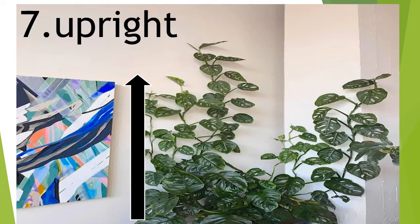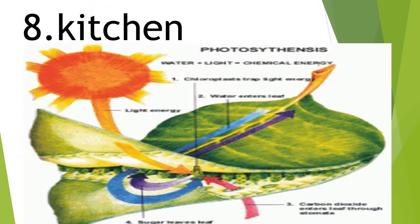Number 7: U-P-R-I-G-H-T, Upright. Number 8: K-I-T-C-H-E-N, Kitchen. Here, kitchen means the leaf, because the leaf makes food for the plant and it is called the kitchen of a plant.